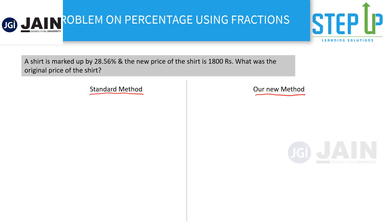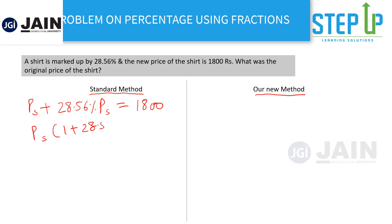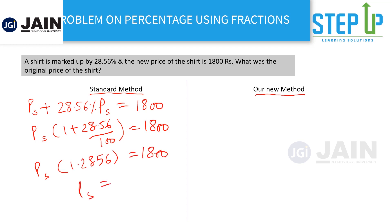A shirt is marked up by 28.56 percent and the new price of the shirt is 1800. What was the original price? Using the standard method: let the price be P. Then P plus 28.56 percent of P equals 1800. That means P times (1 plus 28.56 by 100) equals 1800, or P times 1.2856 equals 1800, giving P equals 1800 upon 1.2856. After all these equations, you're still left with a nightmare calculation — and you may waste time or end up with a wrong answer.